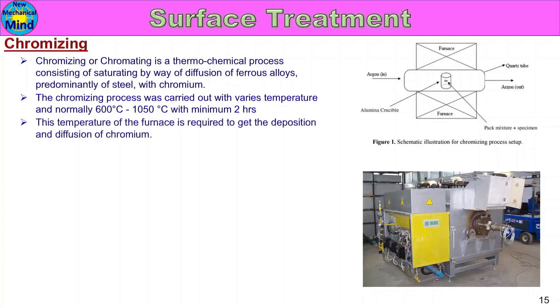This temperature of the furnace is required to get the deposition and diffusion of chromium. The chromizing process is carried out at various temperatures, normally 600 degrees centigrade to 1050 degrees centigrade, with a minimum of two hours.